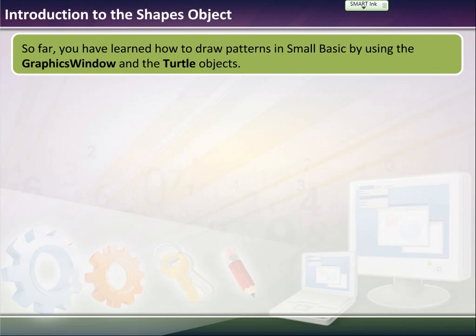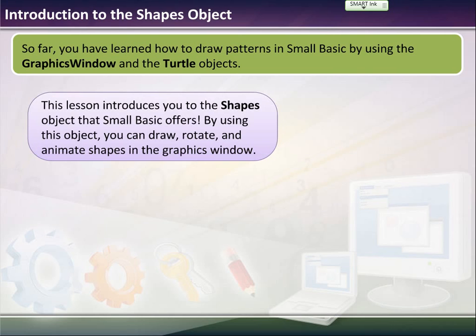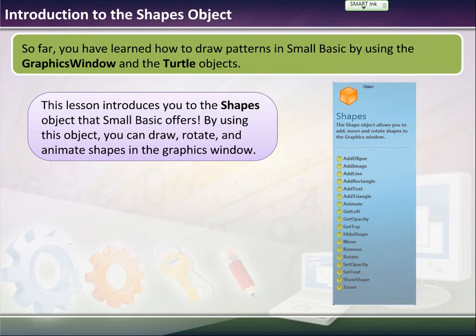So far you have learned how to draw patterns in Small Basic using GraphicsWindow and the Turtle objects. In this lesson we're going to introduce you to the Shapes object, and it lets you draw and rotate shapes in the graphics window.